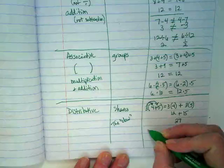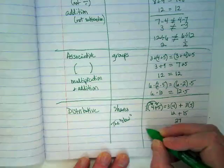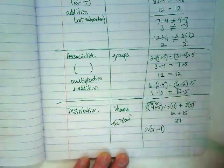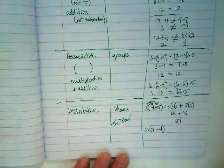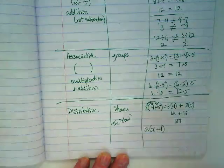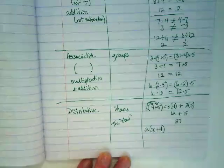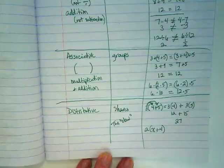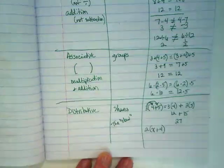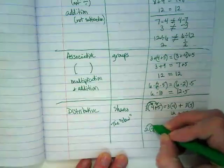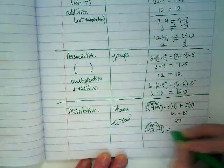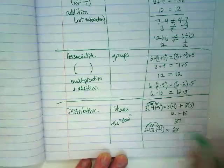This property is used a lot in algebra. If I've got 2(x+4), I have no idea what this x is, and sometimes we don't find out. Sometimes it's just there and we work with it. I would share the 2 times the x and the 2 times the 4.